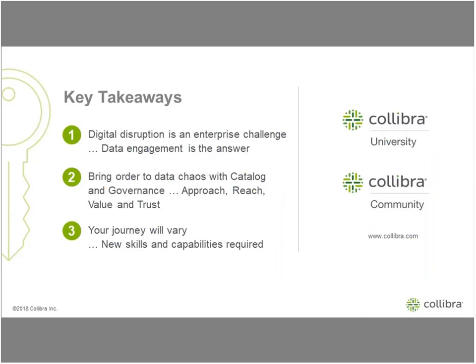Let me just bring this together. The key takeaways: the core challenge is we've got to become much more digital, and data is going to be the cornerstone of that. But it's not just about making the data available — it's about the engagement around the data. Second, a catalog and governance is the right solution to bring order to the chaos, but before you think about it, make sure you focus around your approach, your reach, the value, and your trust. And lastly, how do you get started? Your journey will vary, but it's going to require you to focus around different types of skills as well as new capabilities, and you need to ramp up how you're thinking about governance because it's going to be a cornerstone going forward.